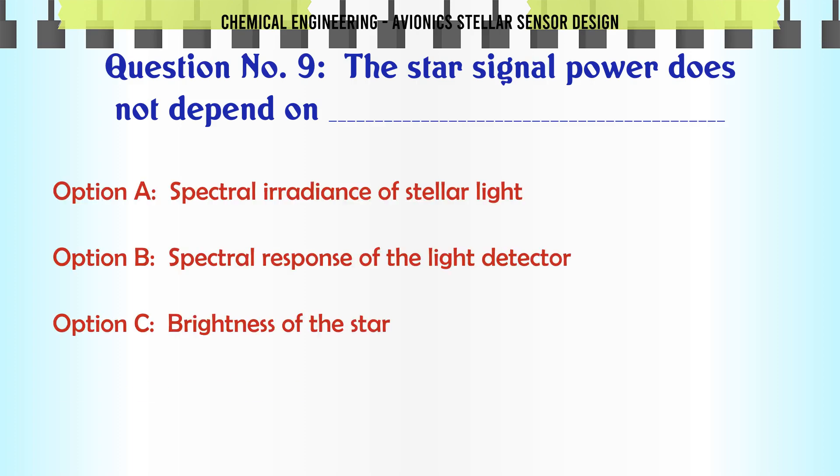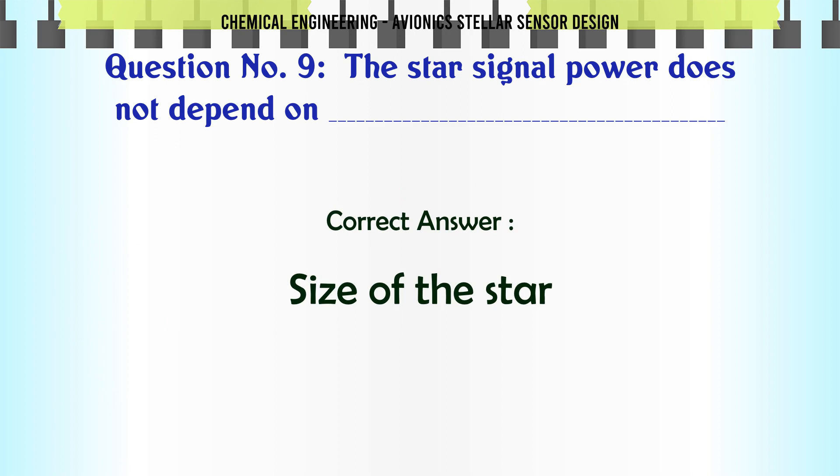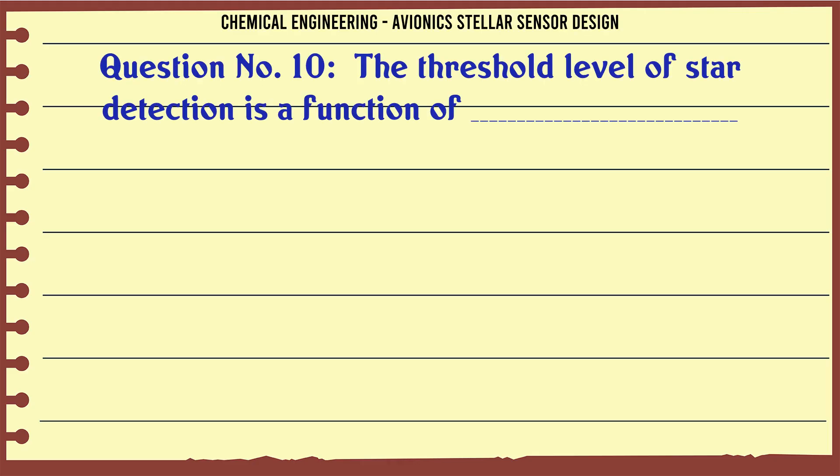The star signal power does not depend on: A. Spectral irradiance of stellar light, B. Spectral response of the light detector, C. Brightness of the star, D. Size of the star. The correct answer is Size of the star.